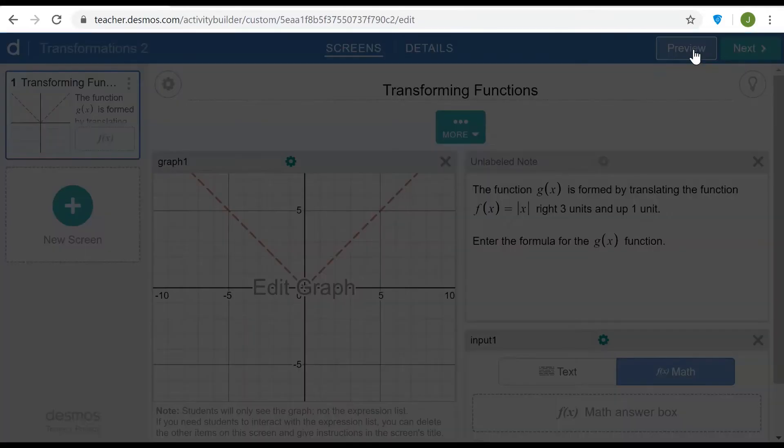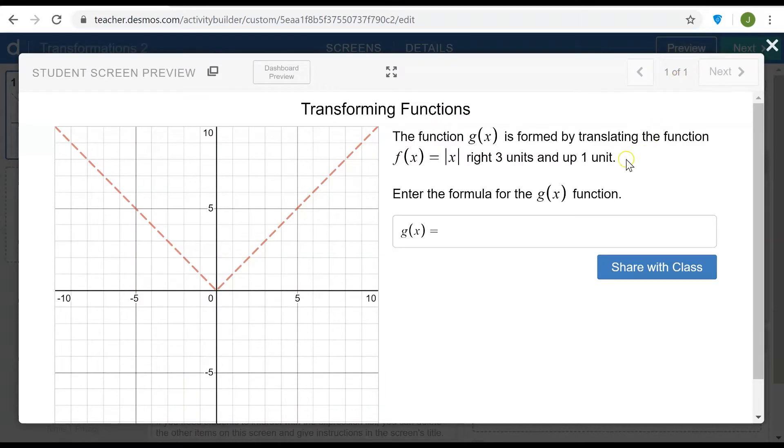Let's take a look at the preview of the activity as it exists now. To complete the task, the student has to enter the absolute value of x minus 3 plus 1 and the teacher can see a check mark in the dashboard but the student doesn't see any feedback.